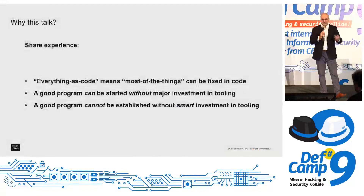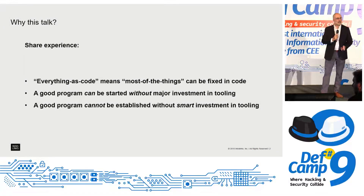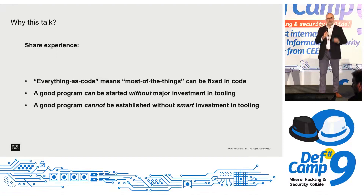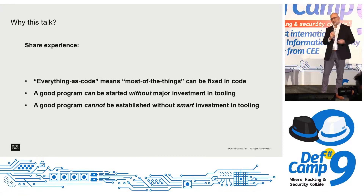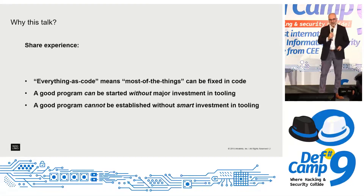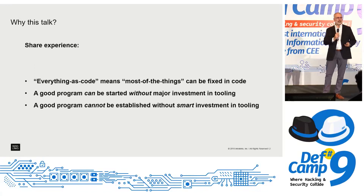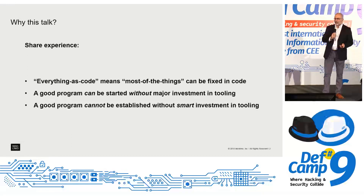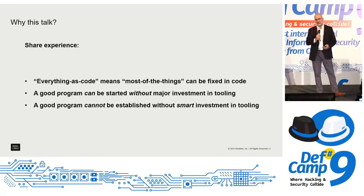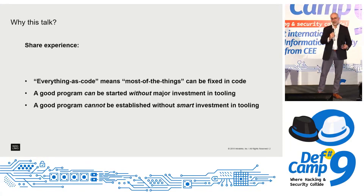So why are we having this talk? First of all, today everything is as code — infrastructure as code, configurations as code, network as code. That means all security issues potentially can be fixed in the code. And you can really start a good application security program without investing much money. Tools are not that important in the first stage — it's more important to have the commitment and actual processes for how to fix the things you find.